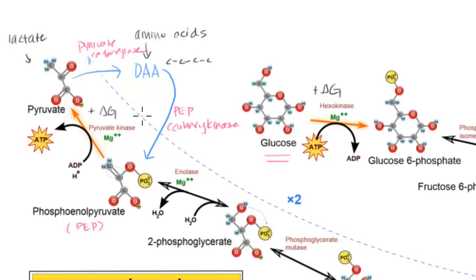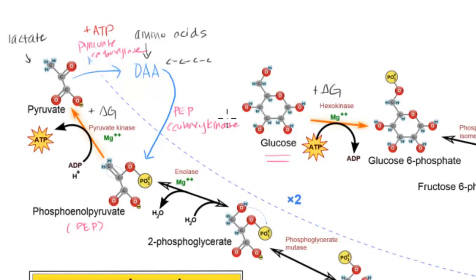Since gluconeogenesis is an anabolic process — we're building something up — it requires energy. Energy comes usually in the form of ATP, and the first step of the reaction does involve ATP. The second step, where PEP carboxykinase is involved, also involves energy in the form of GTP, which is pretty much the equivalent of ATP but uses guanine as its nucleotide base.